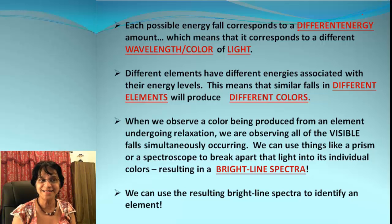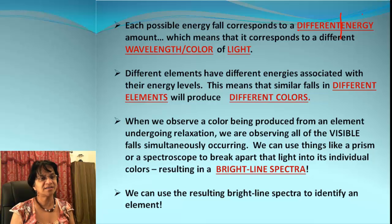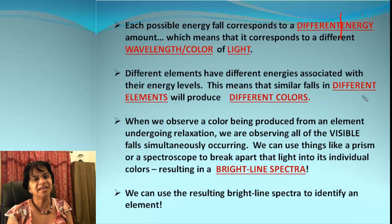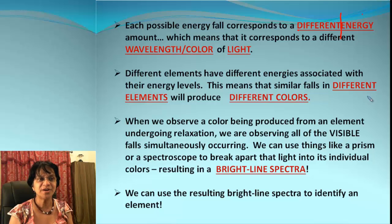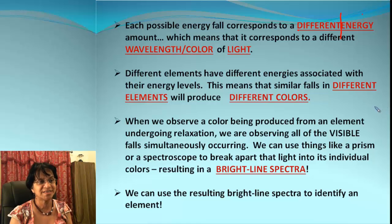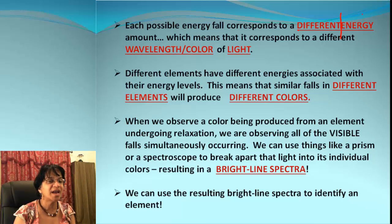Let's fully understand Bohr's atomic model and how it is linked to the electromagnetic spectrum. According to him, when electrons jump around, that results in different energies, which means a different wavelength or color of light. One important thing is that different elements will have different energies associated with their energy levels, and that will result in different elements producing different colors.